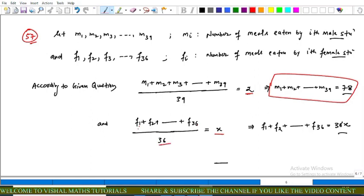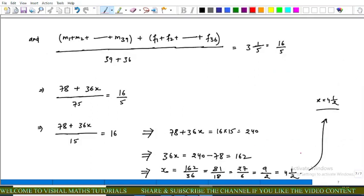Because we have 36 numbers, this implies that sum of this meal eaten is 36 into x. Now we also given that combination of male and female mean equals 3 1/5.